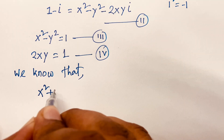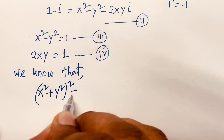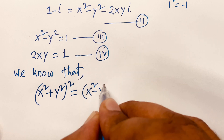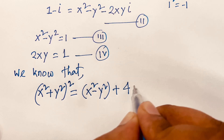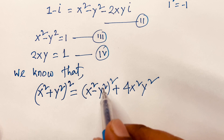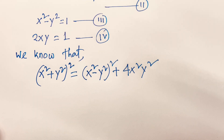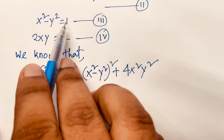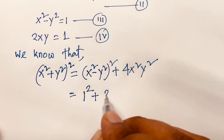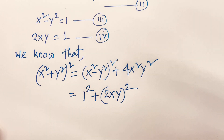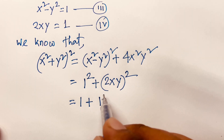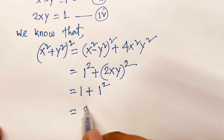We know that (x squared plus y squared) whole square equals (x squared minus y squared) squared plus 4·x squared·y squared, because (a plus b) whole square equals (a minus b) whole square plus 4ab. So x squared minus y squared is 1, giving 1 squared, plus (2xy) whole square. Since 2xy equals 1, it is 1 squared plus 1 squared.